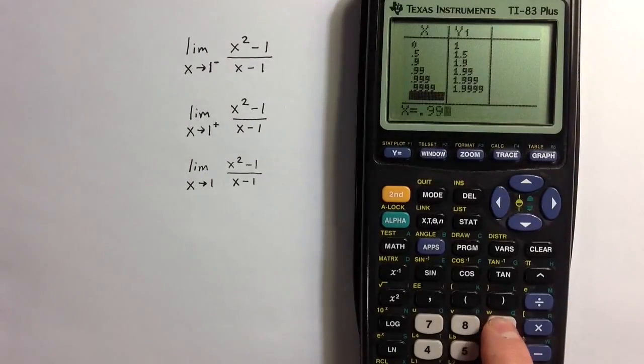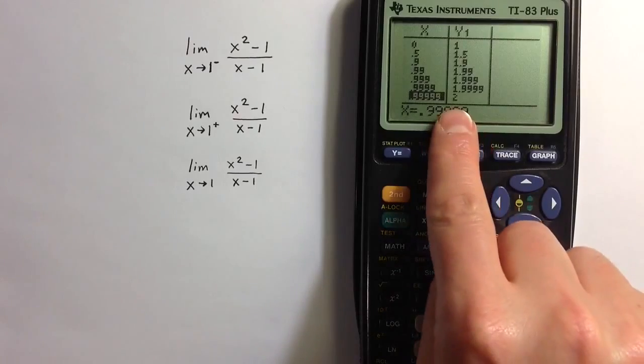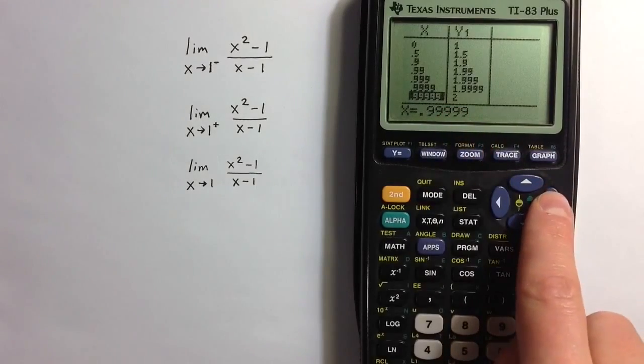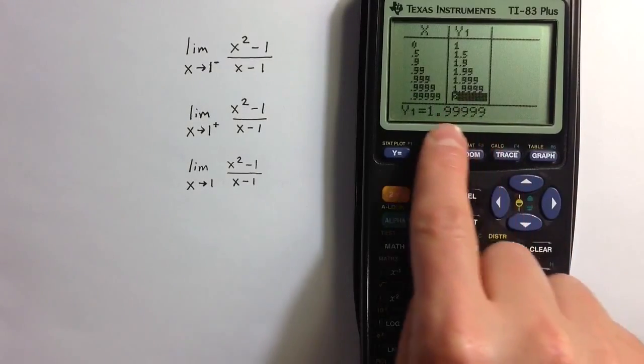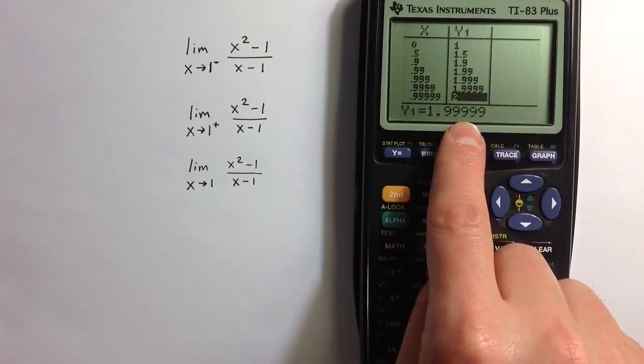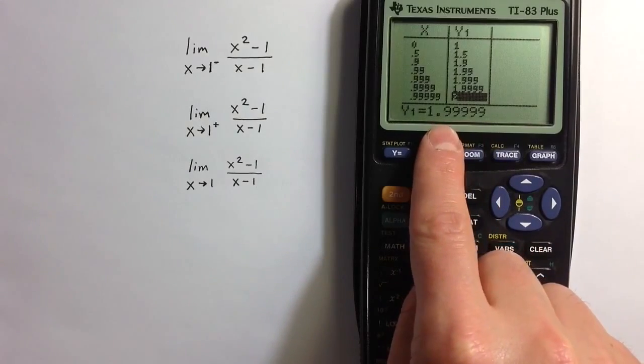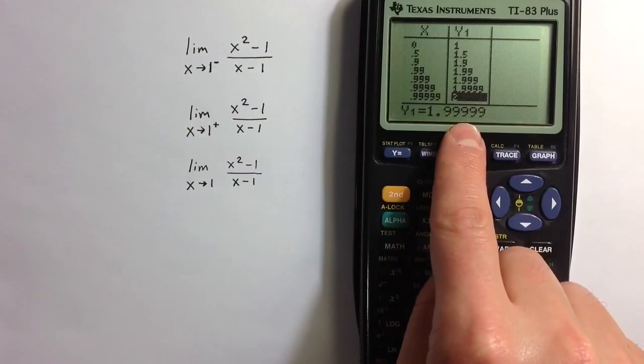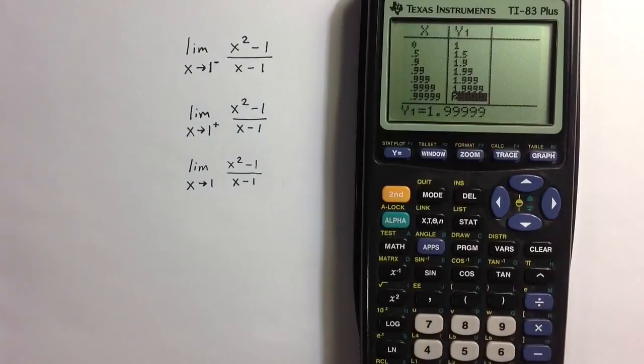And we could go as close as we'd like. This doesn't quite mean that we're at 2. Using the arrow keys, we can go over and see a more accurate expression, see the expression without so much rounding. So we're still a little bit less than 2, but we're definitely getting closer and closer to 2.